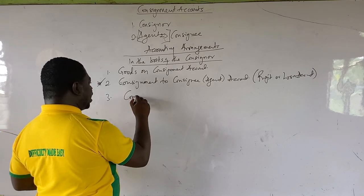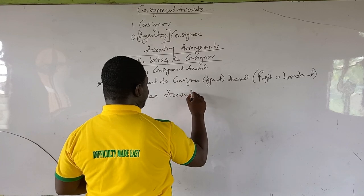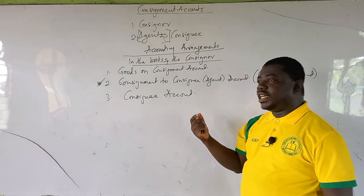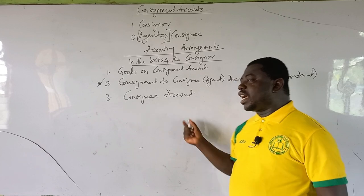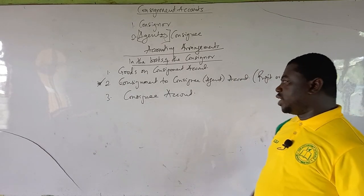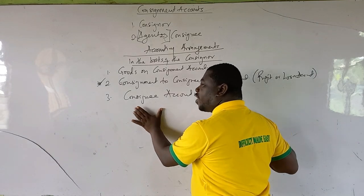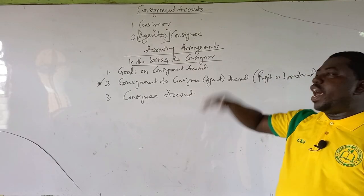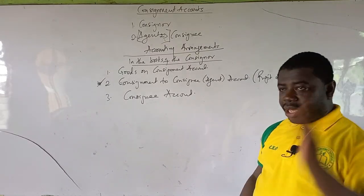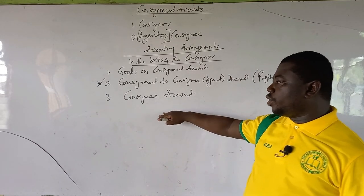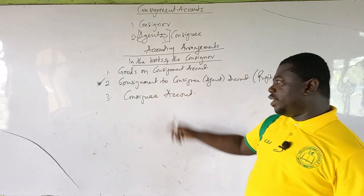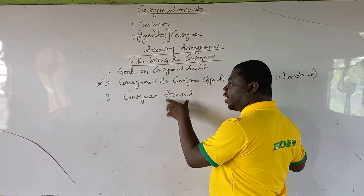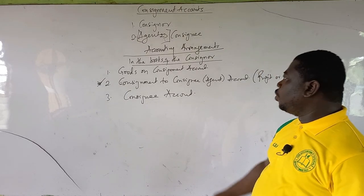The third account is the consignee account. It has similarities with the consignment to consignee account, but it only factors the expenses of the consignee. In the consignment to consignee account, all expenses incurred by both the consignor and consignee are debited. But in the consignee account, we only consider the expenses of the consignee. The difference here is not called profit — it is settled by bank, cheque, or bill of exchange.